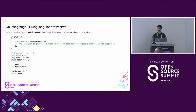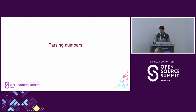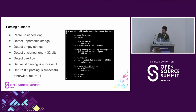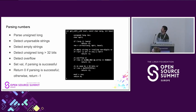By the way, I'm not calling out any specific projects, but if you're interested I can look it up. All the examples today are from production code from major projects. The next one is about parsing numbers. This is from a major Linux utility — if you're running Linux, you're probably running this function right now somewhere on your computer. It's supposed to parse unsigned long numbers — a 32-bit unsigned integer.